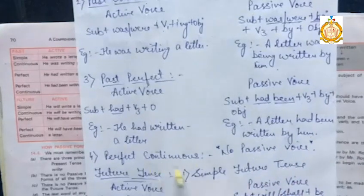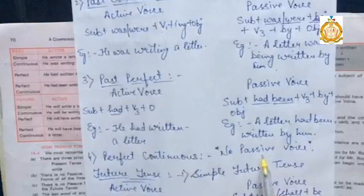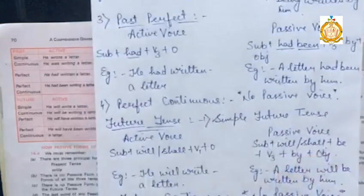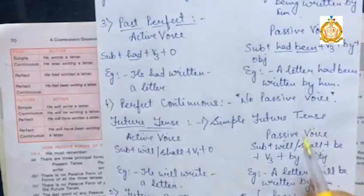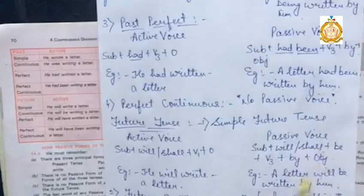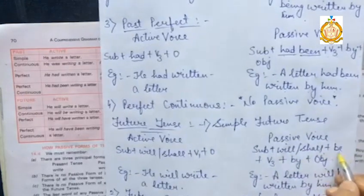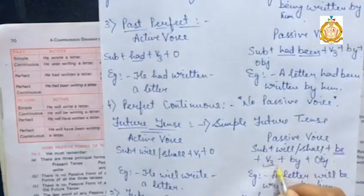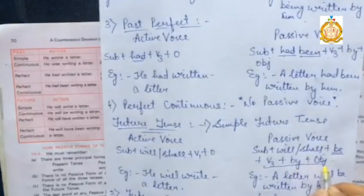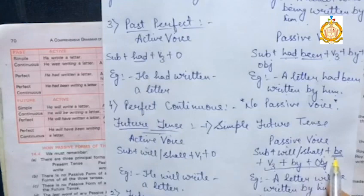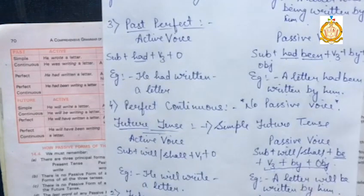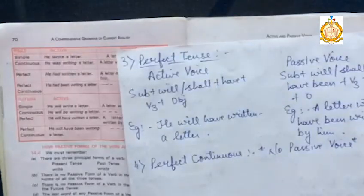Next comes simple future tense. It will use 'will' or 'shall,' so the passive voice formation is: Subject + will/shall + be + verb's third form + by + object. All other things remain the same — verb's third form, 'by,' and the object. The only change is in the helping verbs. We don't have any passive voice for future continuous tense — that is an exceptional case.